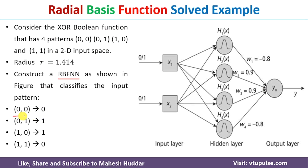That is, whenever the pattern is equal to 00 or 11, the output should be equal to 0. In all other cases, the output should be equal to 1. I will be considering a radial basis function neural network which contains one input layer, one output layer, and one hidden layer. The input layer contains two neurons, the output layer contains one neuron, and the hidden layer contains four neurons.